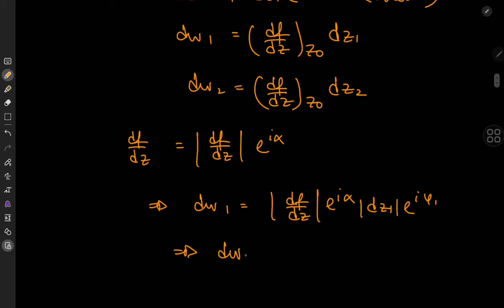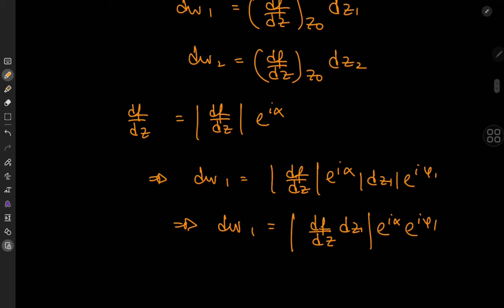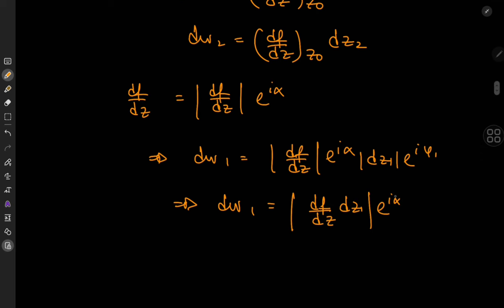So this implies that dw1 equals the modulus of df by dz times dz1 times e to the i alpha times e to the i phi1 and of course this means that we have an argument of alpha plus phi1. By the same token we have dw2 equal to the modulus of df by dz times dz2 times e to the i alpha plus phi2.